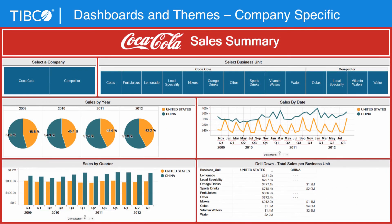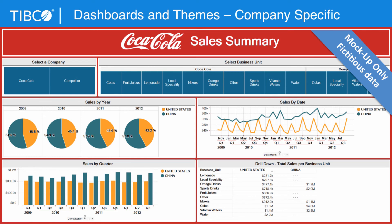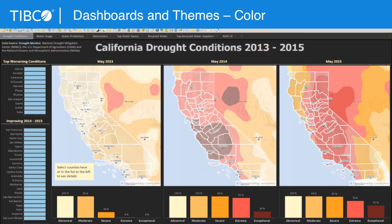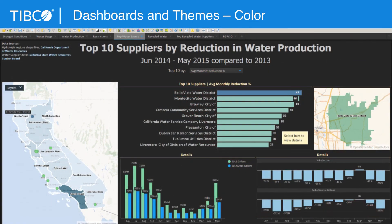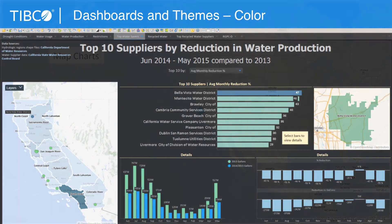We can theme these, for example, to themes of the company logos to show to executives, allowing you to brand your dashboards and easily get them recognized by folks around your organization. A black background can be very useful if it's a simple layout. Here we're looking at California drought from May 2013 to 2014 to 2015, showing the heat of the drought in red and amber color schemes, as opposed to looking at water reduction in a cool color set highlighting issues in Southern California. The use of themes and color in dashboards can be useful in communicating information in the data.